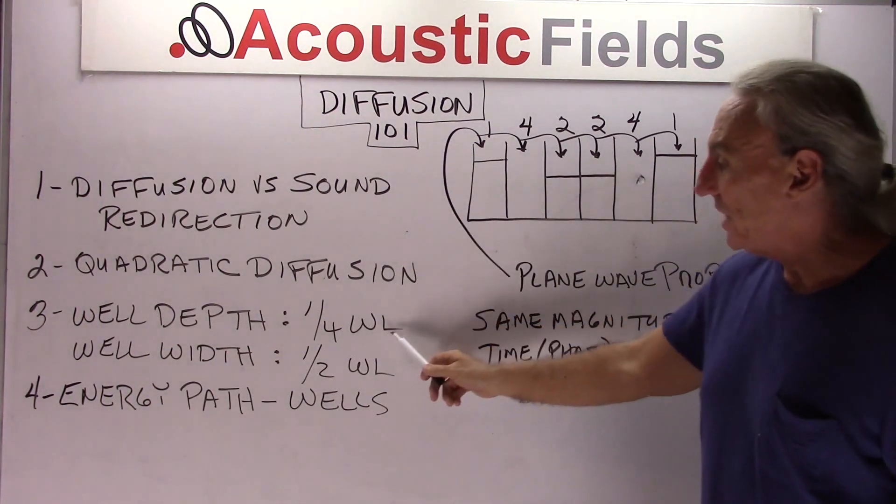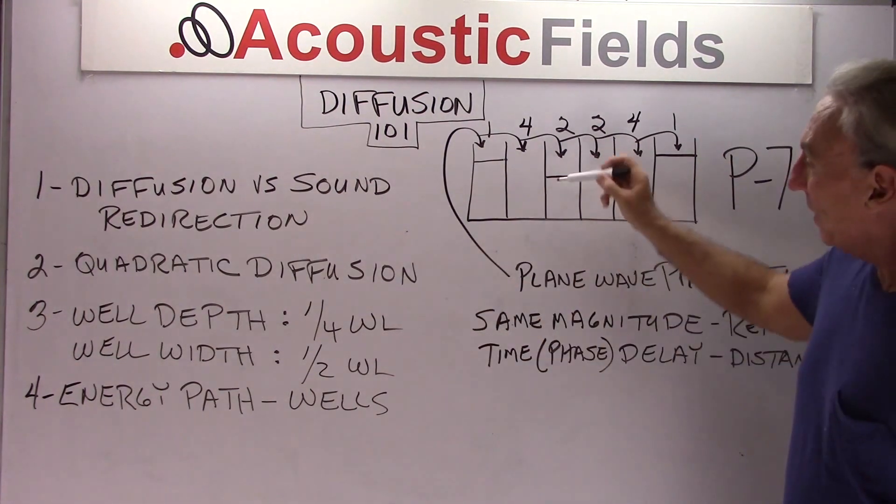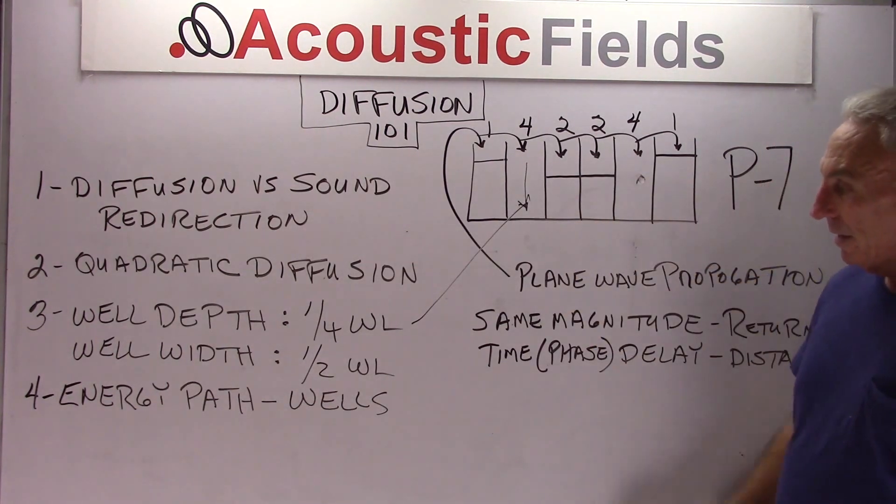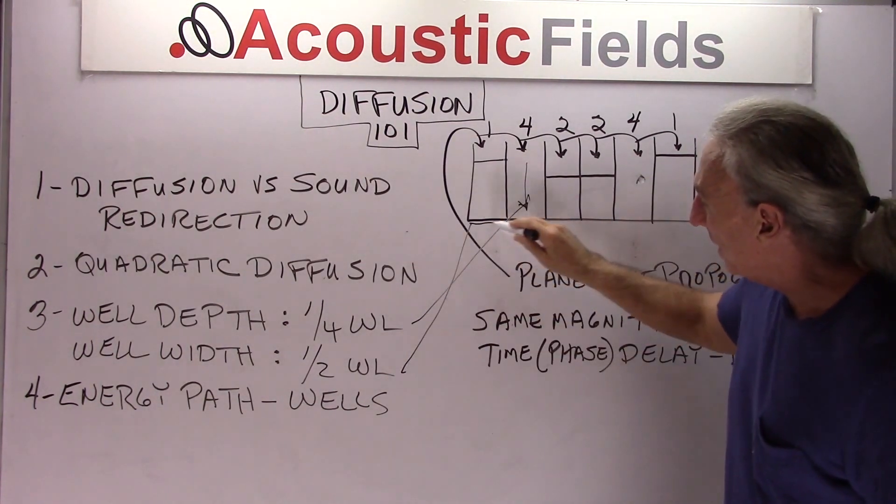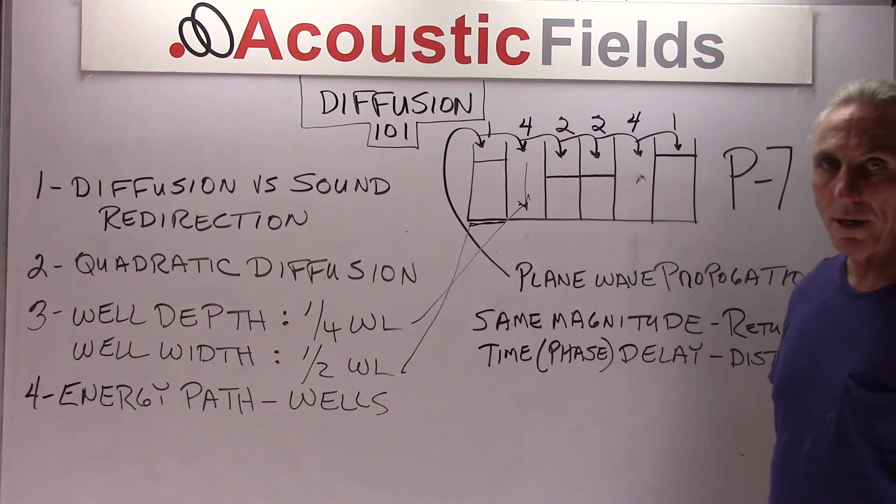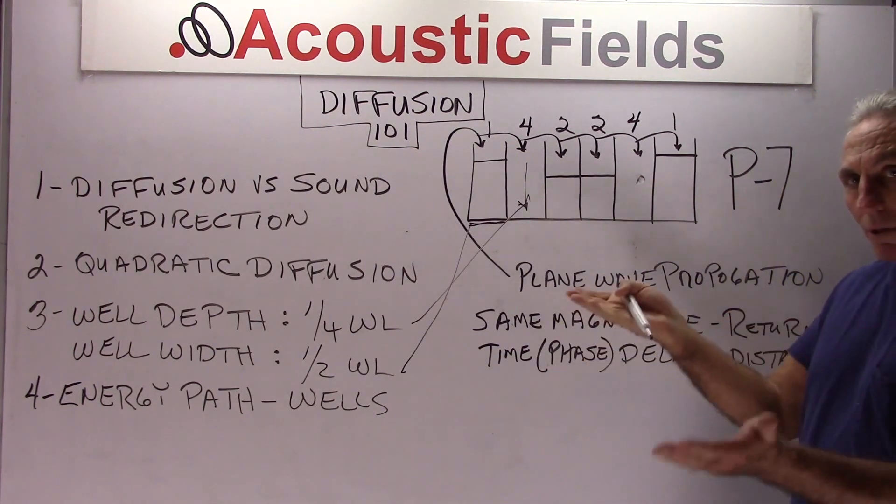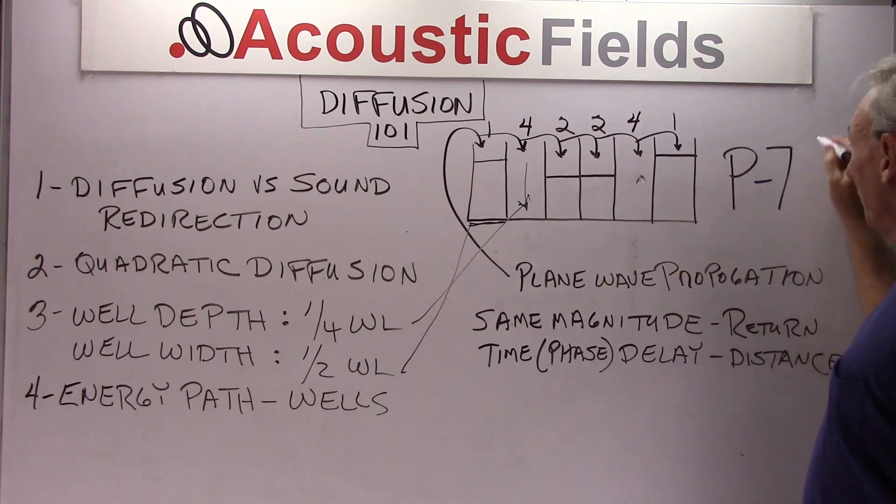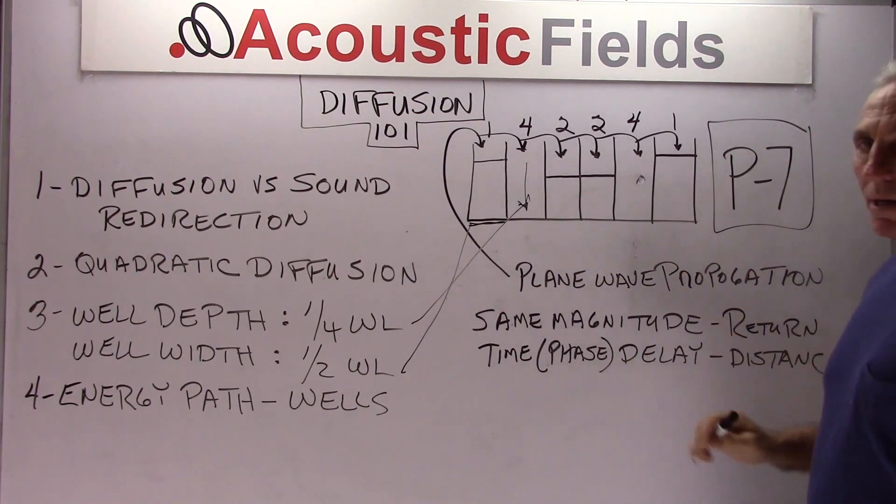Quadratic diffusion - each well depth is calculated at one quarter wavelength for the depth. Each well width here is calculated at one half wavelength. So you have a little bit of flexibility in width and obviously in depth. This is based on prime number seven. All diffusers are based on some prime.